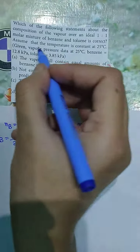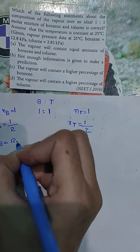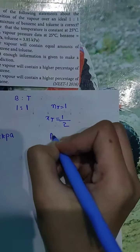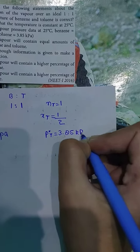Assume that temperature is constant. Vapor pressure of pure component benzene is given as 12.8 kilopascal, and toluene is 3.85 kilopascal.